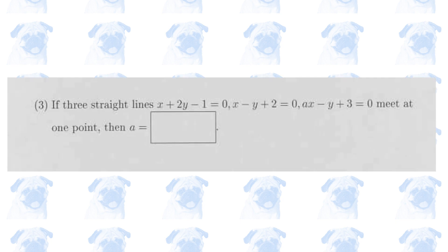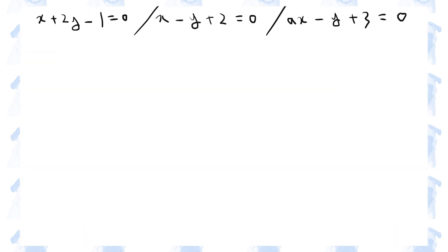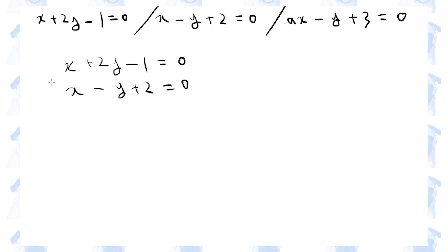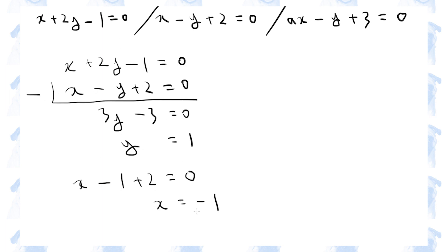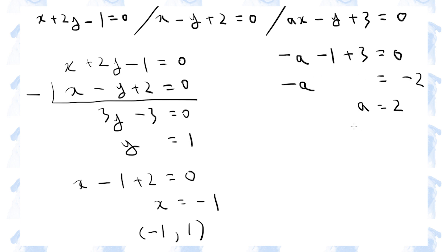Section one, number three. In this question, we are told that these three straight lines meet at one point, and we need to find the value of a in the third equation. Because these lines meet at one point, we can solve the first two equations simultaneously to find the coordinates of the intersection, which are minus one and one. So let's substitute these values into the third equation to find the value of a. So a is two.